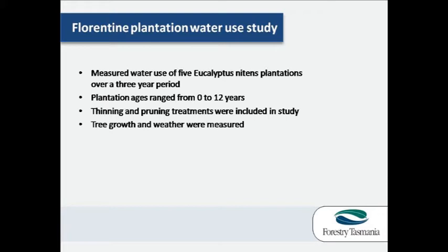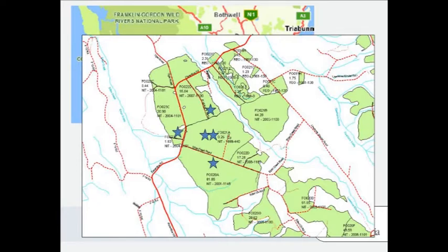Our main experiment has been in the Florentine Valley where we have been working in five different eucalyptus nitens plantations. The plantations have ranged in age from 0 to 12 years during the three years of our studies, and we have basically let all the natural events occur, such as drought, insect attack, pruning and thinning operations, and any other operations normally conducted as part of the life cycle of those plantations. The Florentine Valley is located near Maydena in about central Tasmania, and our five plantations are located in close proximity to one another, planted in different years starting from 1999, on similar soil types with similar aspect and slopes.